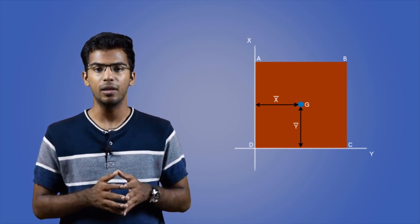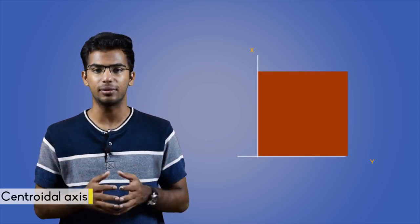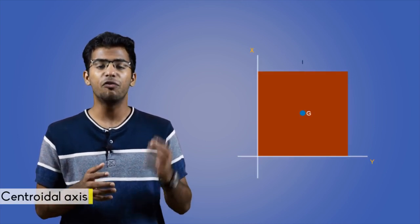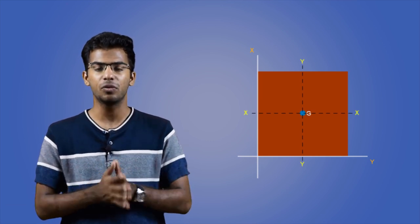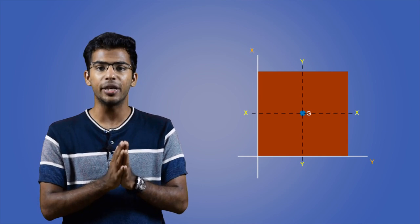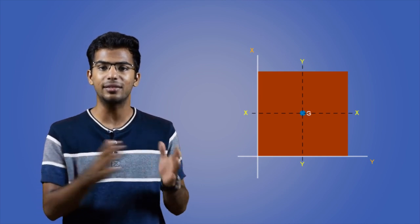So wherever you come across a plane figure, watch out for a reference axis as you have to find the distance of centroid from these axis. The second type of axis is the centroid axis. This is the axis which passes through the centroid of the plane figure. Usually they are denoted by double letters like XX axis and YY axis.